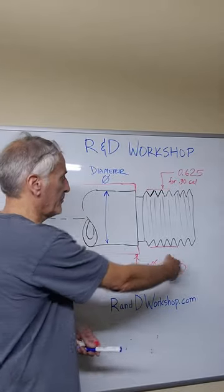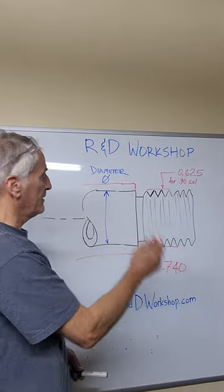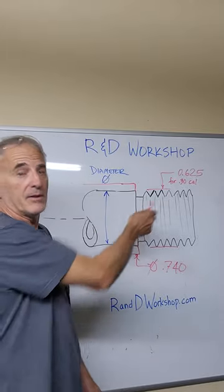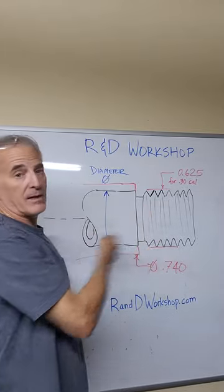ARs are basically 740. Hunting rifles generally are not. You're barely going to get 625 out at the end. Some of them are even less than 625. You may have to cut the barrel back.